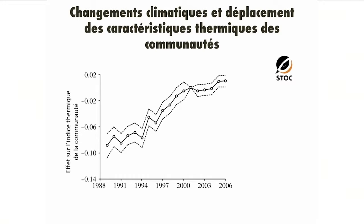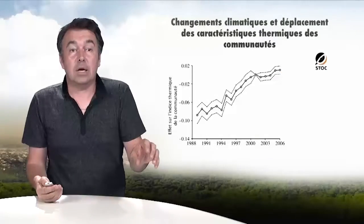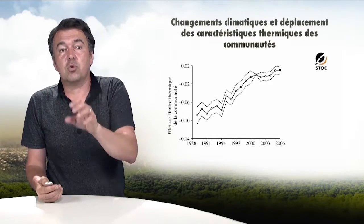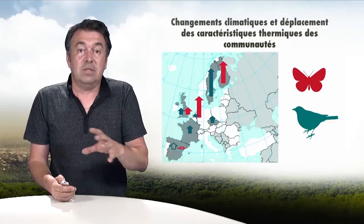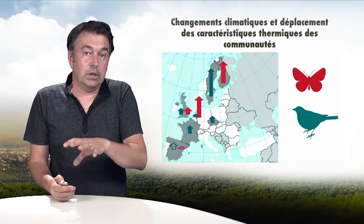Over time, locally in a given location, the average thermal index increases because the climate is getting warmer and communities are responding and adapting to climate change, with increasing numbers of warm-climate-preferring individuals in any local community. Conversely, there is a lag between the climate and the change in the community — the community cannot change as fast as the climate does. On the European scale, this is reflected in a northward shift of the thermal composition of communities, which varies from country to country.